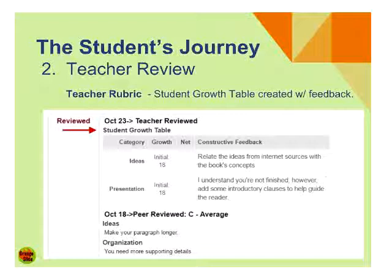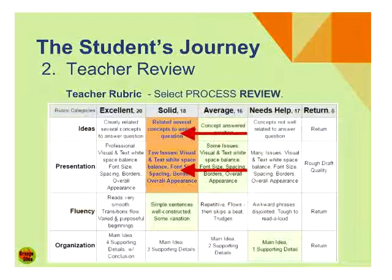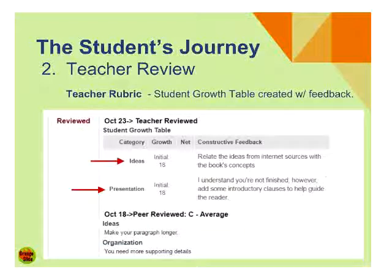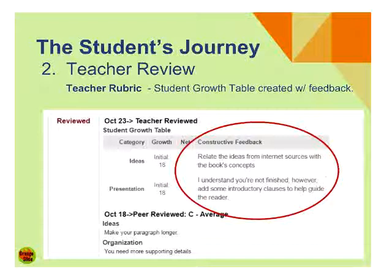At the very top of the grade table, before we had peer review with ideas, organization, and feedback. But now we're introducing the student growth table. In the student growth table we see ideas and presentation — the two categories we had selected. They have an initial score of 18. This is why it needs to be reviewed at least once. We have an initial score of 18, and then the feedback we wrote in the add-on is now put up here in a nice formal presentation where the student can actually see: my score is an 18, what do I need to do for ideas to improve that? For example, 'relate ideas from the internet sources with the book's concepts.'